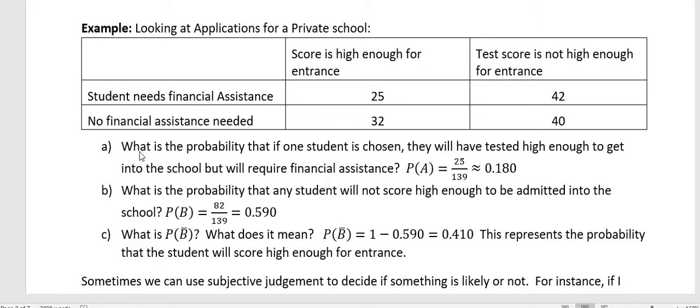The first question is: what is the probability that if one student is chosen, they will have tested high enough to get into this school but will require financial assistance? If we're going to answer any questions about a whole group like this, we want to figure out the total number of students. 25 plus 32 plus 42 plus 40 is 139. That's our denominator, which is our entire sample space - all the people in our testing this year.